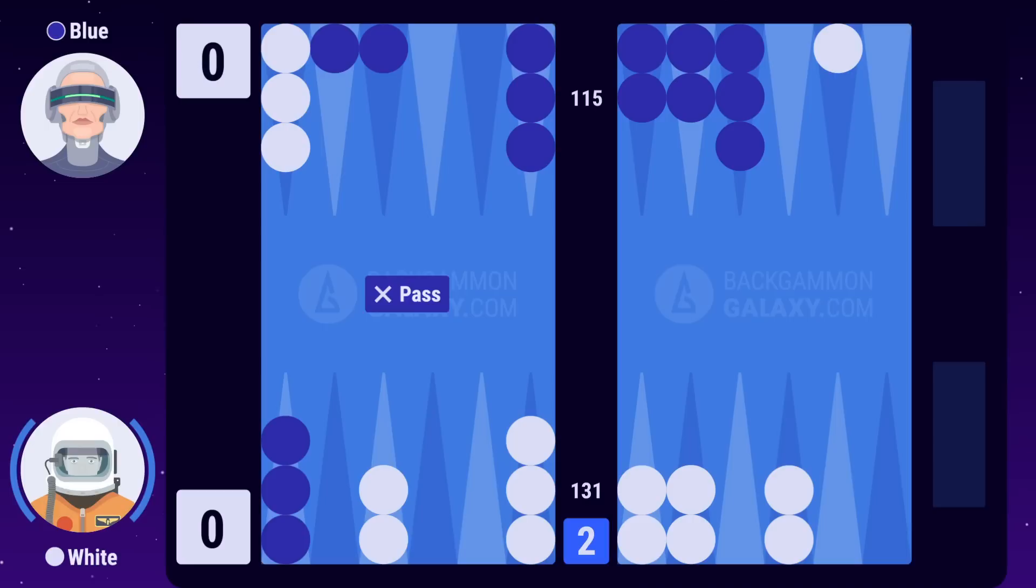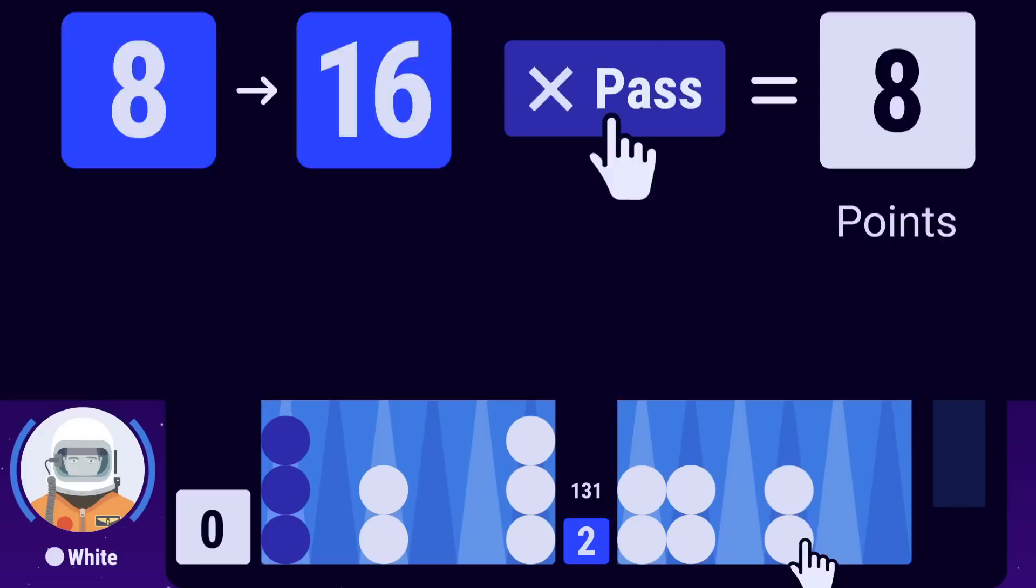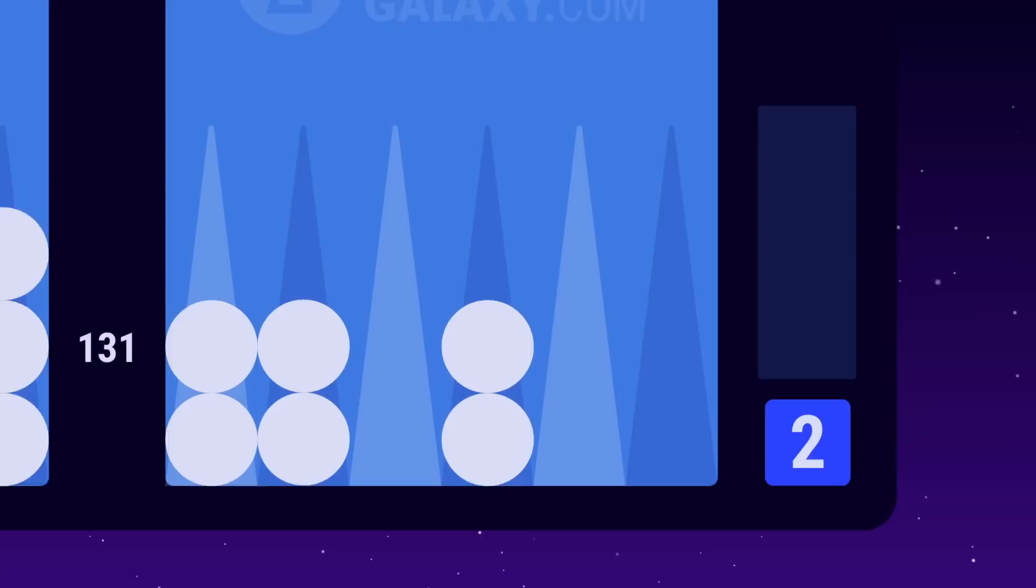Blue doubles white, and white now has two options, pass or take. If he passes, the game ends and his opponent wins the number of points of the cube level. Passing an initial cube wins the opponent 1 point. Passing a redouble from 2 to 4 wins the opponent 2 points, and so on and so forth. White takes, thereby becoming the owner of the cube. The game continues, and both players now play on for the new higher stakes.